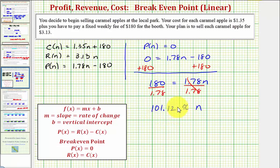But of course, we can't sell a fraction of an apple. And because we're looking for the smallest positive profit, round this up to the next integer. So we'll actually use n = 102 to answer our question.